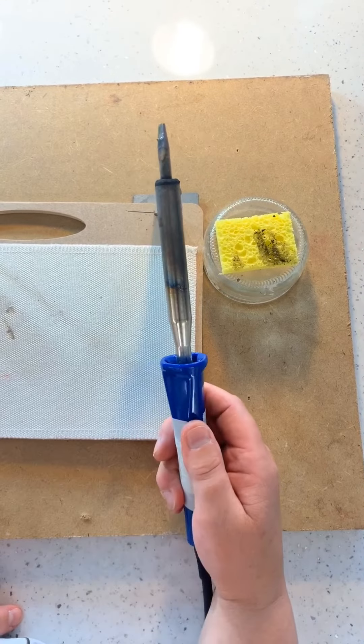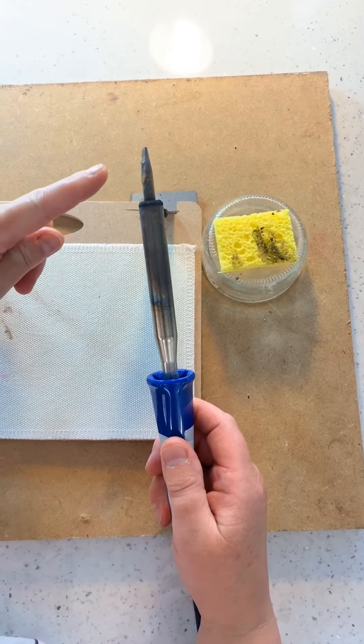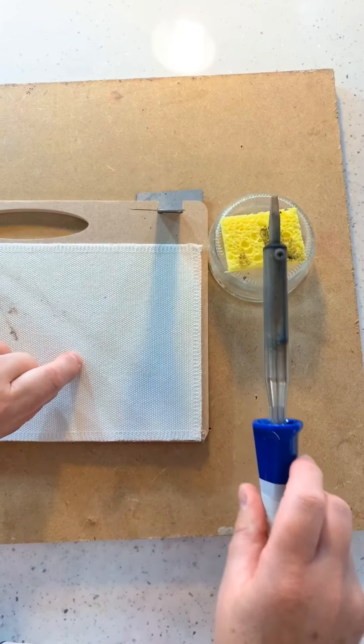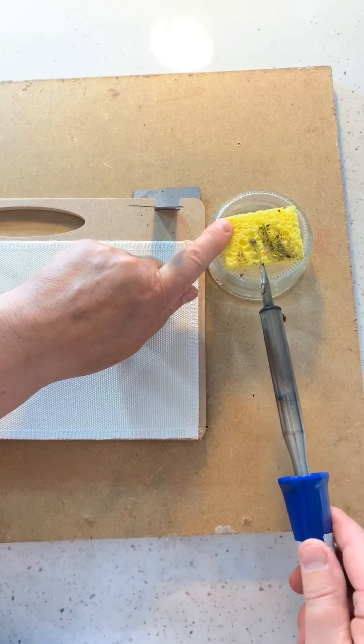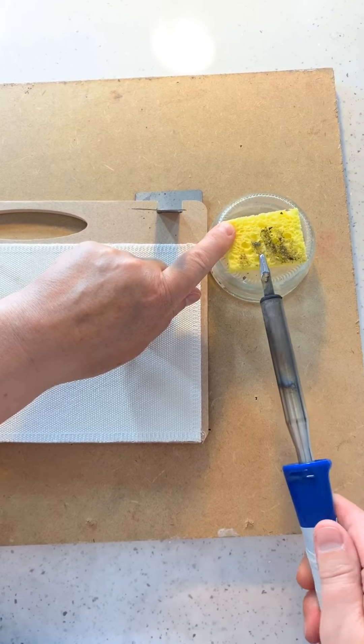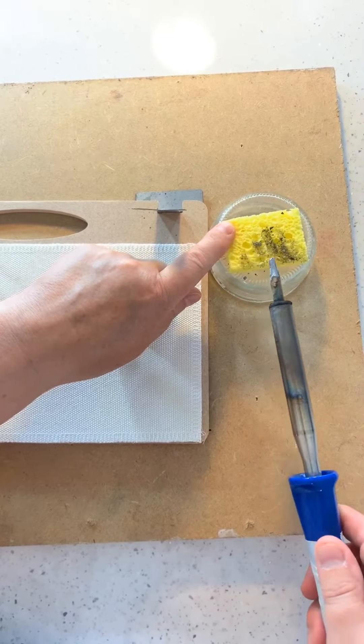Also, you can see my soldering iron tip is very dirty. So I'm using my sponge, making sure I give it a good wipe before I start. And it's very gentle. You don't have to saw at this. It's just to take off the carbon buildup.